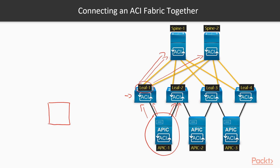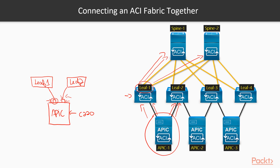The APIC is a UCS C220 server. On the back, you have a VIC interface with two SFP ports. We take an SFP cable, connect one side to one of those back ports, and connect the other to a leaf - spreading connectivity between leaf one and leaf two. This gives us redundancy: if one leaf goes down, we can still communicate over the other leaf.